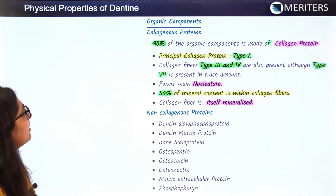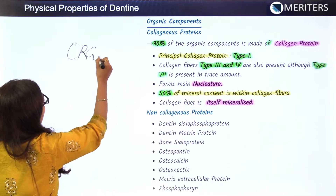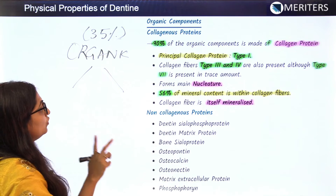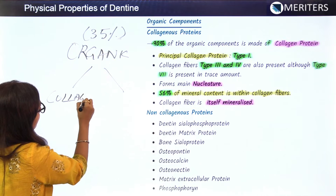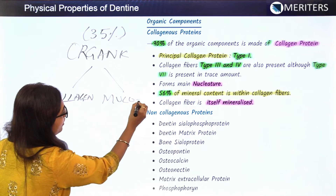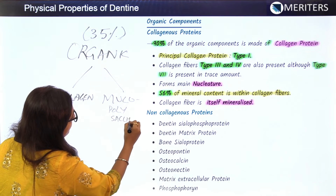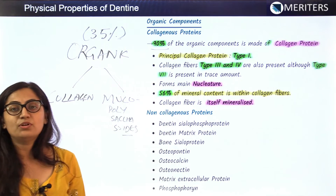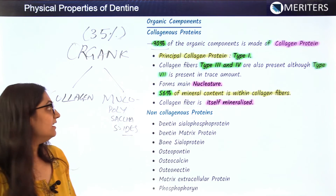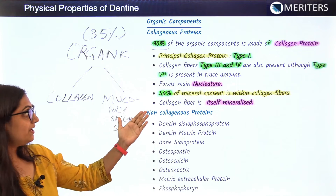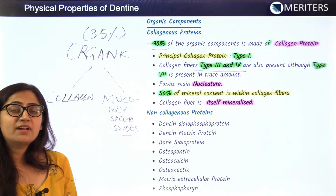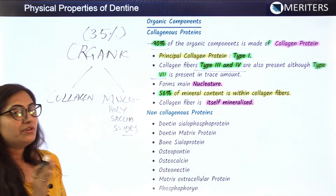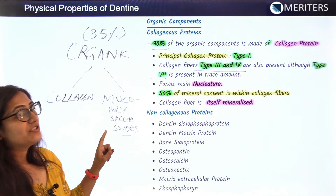The organic component of dentine, which is about 35%, is divided into collagen and mucopolysaccharides. 90% of the organic component consists of type 1 collagen fibers, which form the main portion of dentine. Other collagen fibers present include type 3 and type 4. Type 7 is also present but only in trace amounts — it is the least present. Type 1 collagen protein is the main collagen.